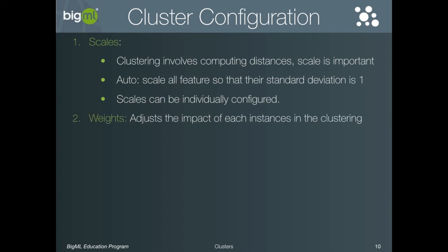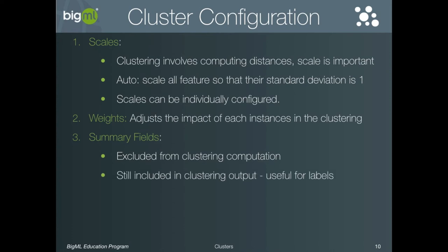The next option is weighting. This is similar to model weights in that it adjusts the impact of individual instances in the clustering computation. Unlike model weights, the only weighting option is to specify a weight per instance as a feature in the dataset. For clarity: scaling changes the impact of features, while weighting changes the impact of instances. The next option is summary fields. Marking a field as a summary field will exclude it from the clustering computation. The difference with summary fields is that although they will not impact the cluster computations, they will still be included in the clustering output. This is especially useful for instance labels.